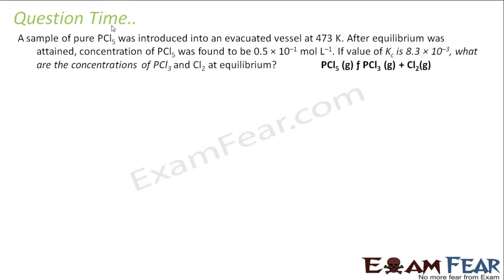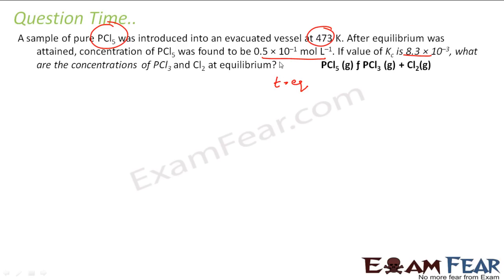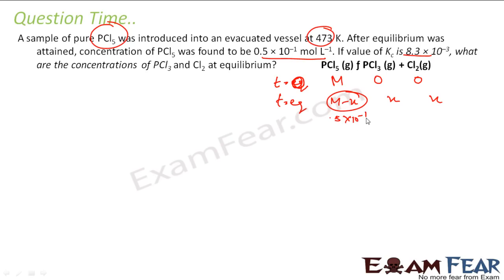A sample of PCl₅ was introduced in an evacuated vessel at 47°C. After equilibrium was attained, the concentration of PCl₅ was found to be 0.5×10⁻¹ moles per liter. If the value of Kc is given, what are the concentrations of PCl₃ and Cl₂? It says that at T equals 0, some M moles of PCl₅ were there and 0 moles of PCl₃ and Cl₂. At T equals equilibrium, PCl₅ becomes M minus x, and if it becomes x of PCl₃ and x of Cl₂, then M minus x equals 0.5×10⁻¹ moles per liter.